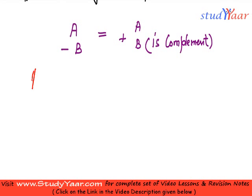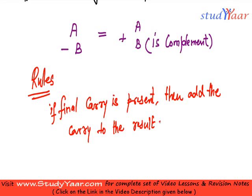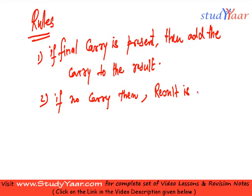The rules over here are: if you get a final carry, if final carry is present, then you add the carry to the result. And rule number two is, if no carry is present, then you don't have to do anything. The result is negative.